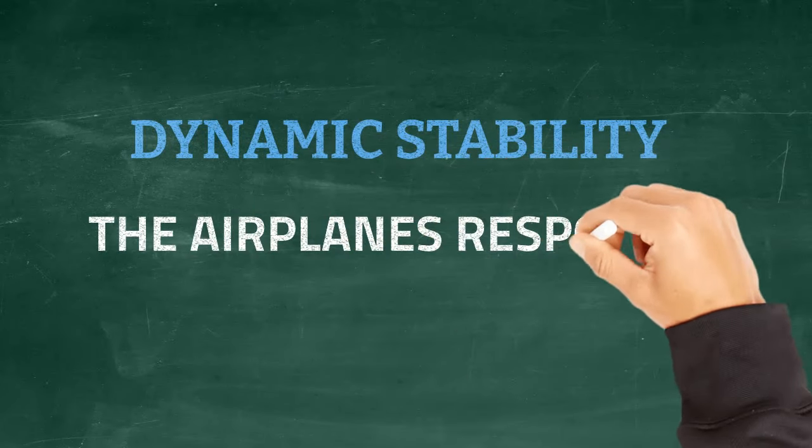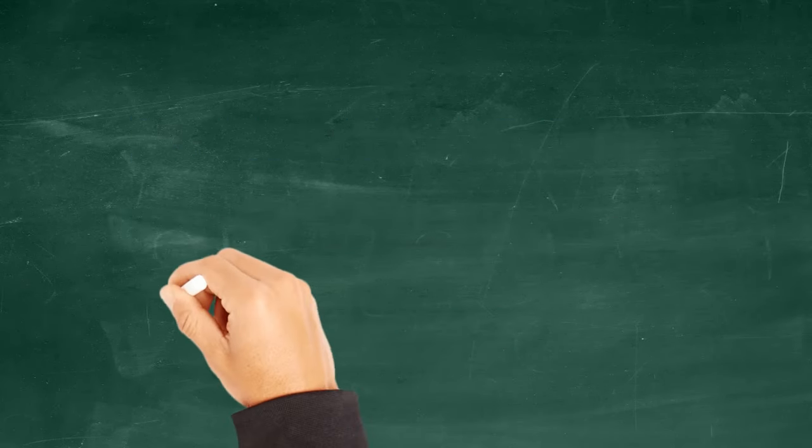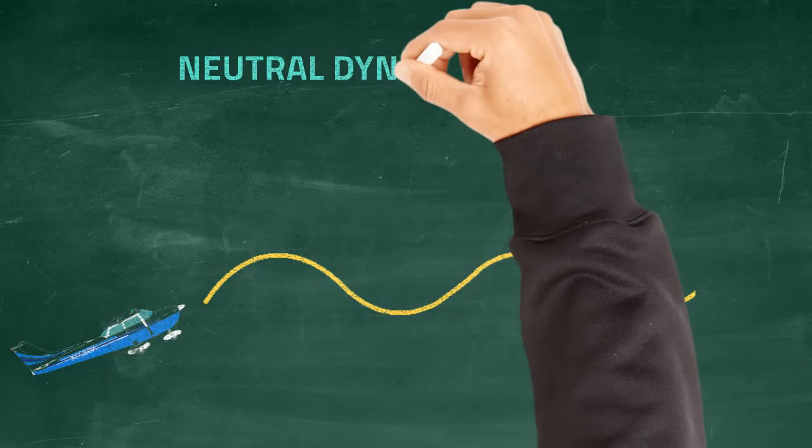Now let's talk about dynamic stability. This is an airplane's response to an upset in the equilibrium over time. Let's say you pitch the nose of your airplane up again. Initially, it may pitch below the initial pitch attitude you've had before. But over time, these oscillations decrease. This would be known as positive dynamic stability.